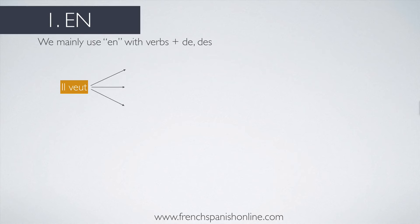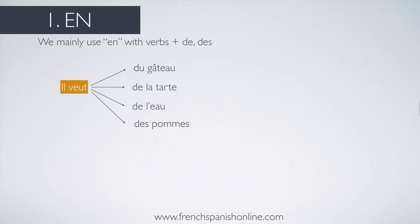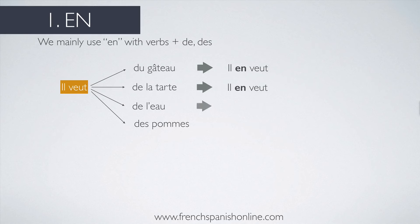Il veut — he wants — with four different examples: il veut du gâteau (some cake), de la tarte (feminine), de l'eau (feminine, starting with a vowel), and des pommes (plural). If you want to replace the noun with a pronoun, you use EN because we have a prepositional verb using DE. So il veut du gâteau becomes il en veut. EN can be used for masculine, feminine, singular, or plural words.